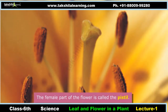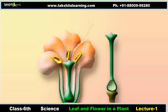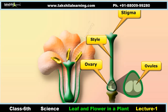Atop the filament are two sacs containing pollen; these sacs are known as anthers. The female part of the flower is called the pistil. It is the innermost part of the flower. The pistil has three parts: stigma, style, and ovary. The stigma is the sticky surface at the top of the pistil that traps and holds the pollen. The style is a tube-like structure that holds up the stigma and leads down to the ovary, which contains the ovules.